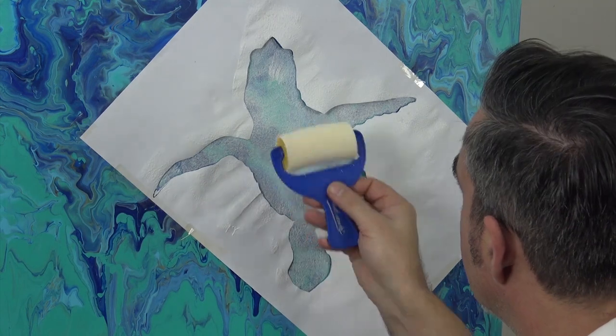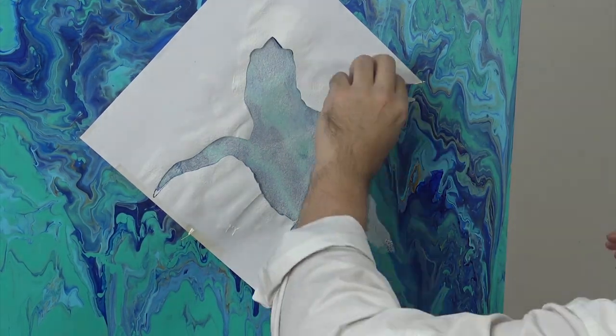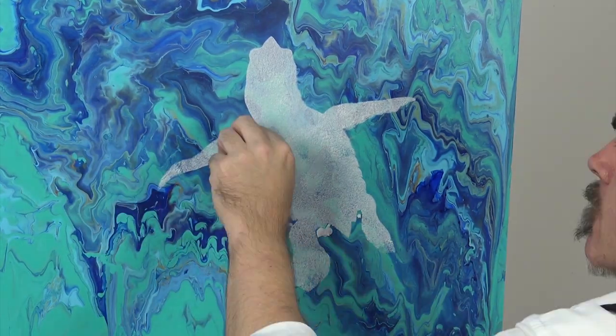This will stop it from buckling. Using a sponge roller also creates a little bit of texture and keeps your coat pretty even. Now remove the stencil while the paint is wet.